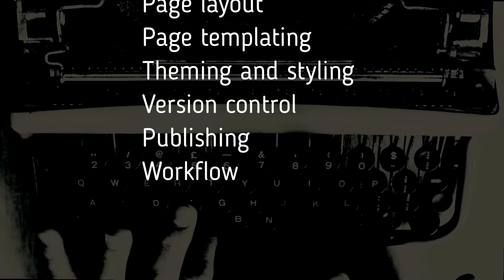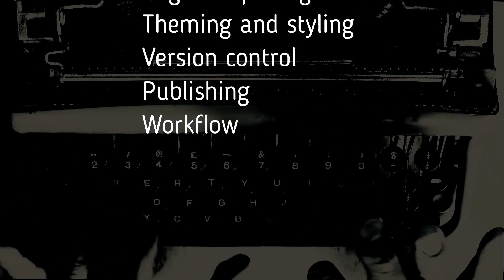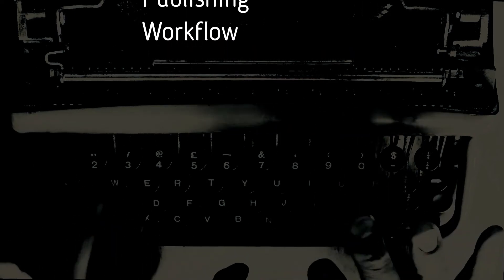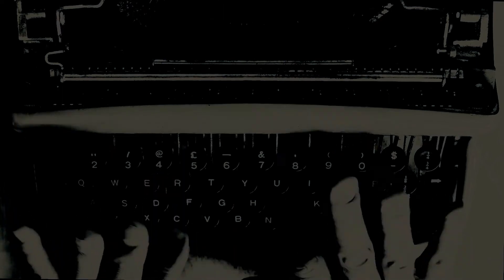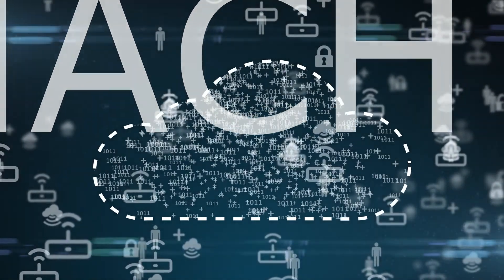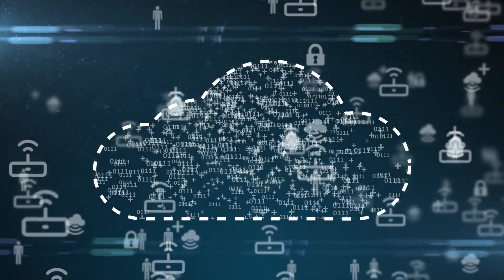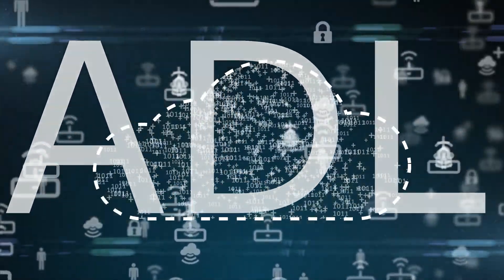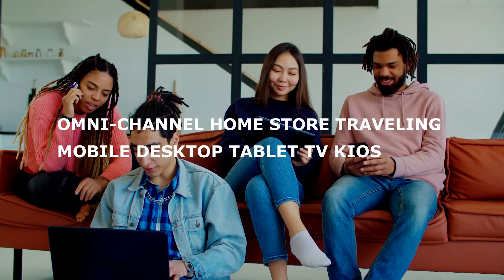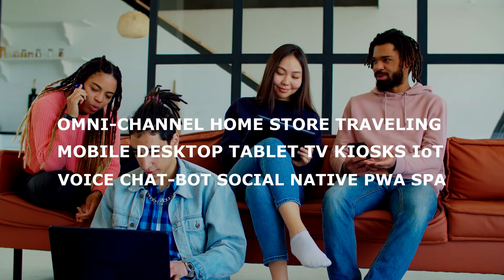The first content management systems provided a separation between what you're working on and the live content through the use of mechanisms such as publishing, which meant things like version control also became important, and then workflow to make sure that you could coordinate multiple business users developing content. It's interesting to note that when you reflect on the content management systems of the past, their basic requirements are the same basic requirements you need for content management systems today. What is really different is how the CMS actually delivers on those requirements and the unique challenges a modern CMS has today — not just delivering to a single web channel, but to multiple channels. Content is no longer just sent to web browsers; it's also sent to native applications, screens on IoT devices, and even voice. This radically changes how content is delivered today and how content needs to be structured.